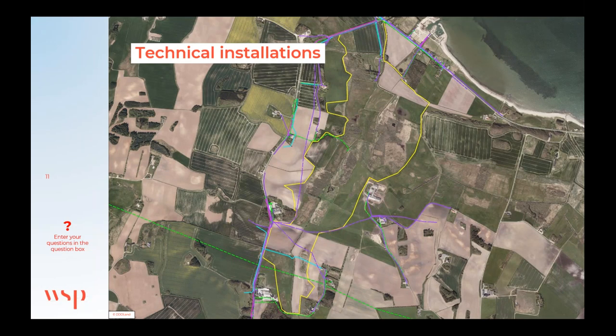Another important part of the technical investigation is locating all the utilities. All utility companies in the area are contacted to provide information on sewer lines, drinking water lines, electricity lines, natural gas pipes, telephone cables, fiber optic cables, and more. There are several utilities that cross the southern part of the project area.